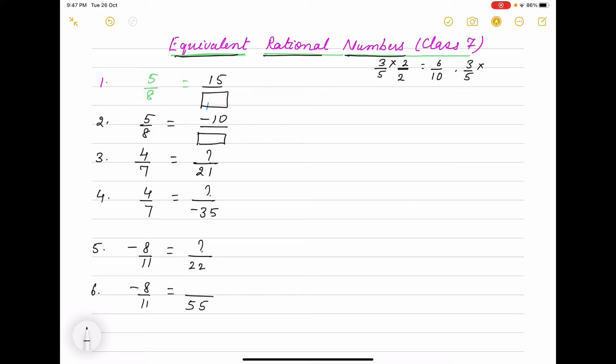And these rational numbers are equal. So like this, suppose it is given that convert into—here fill in the blanks. 5 by 8 equals to 15, and here the number is not known. So you see how you will get 5 to 15? That means we multiply with 3.